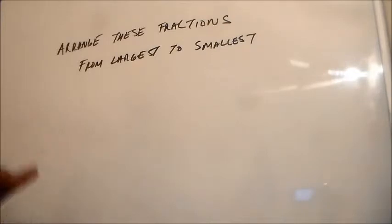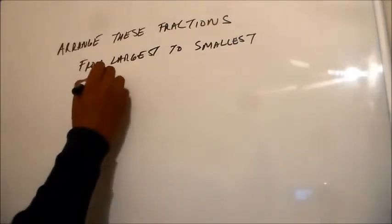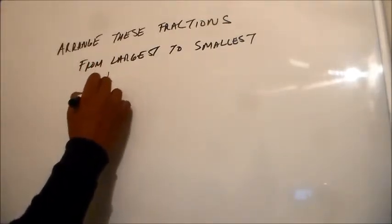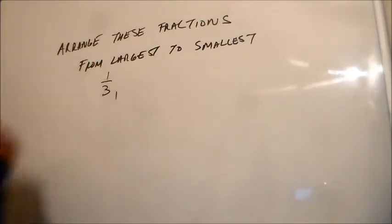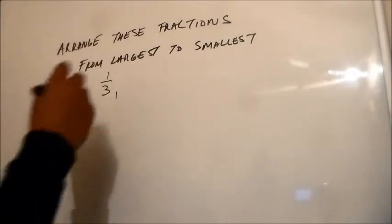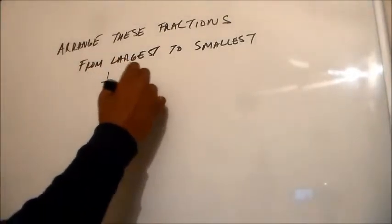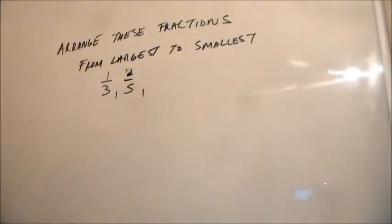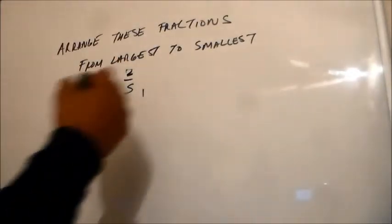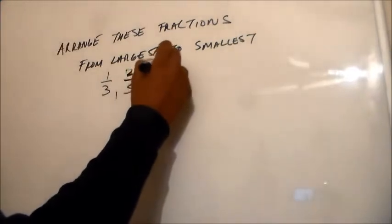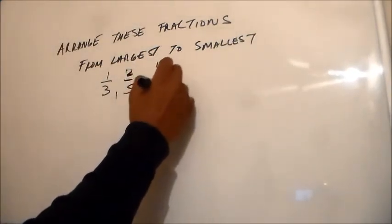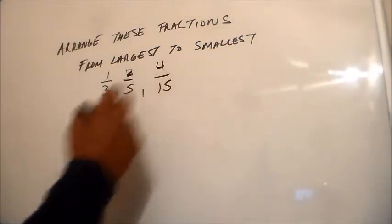So our fractions that we're going to arrange from largest to smallest are one-third, two-fifths, and four-fifteenths.